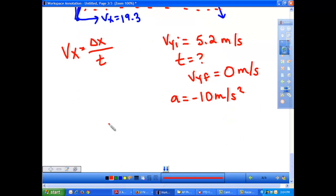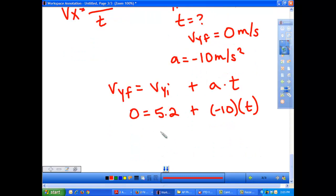So, I can say final speed equals initial speed plus a times t. So, for this, this is zero. Initial speed here is going to be 5.2. And this is 10. And this is t. So, it looks like when I do my math, 5.2 equals 10 times t. So, time is going to be 0.52 seconds. Alright. So, now I know my time.